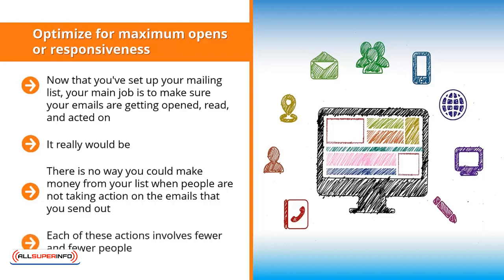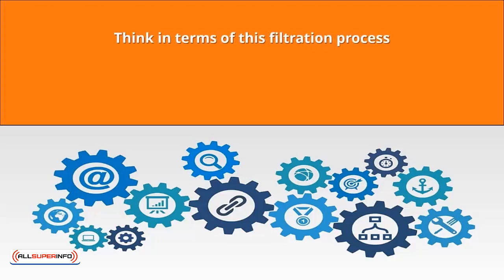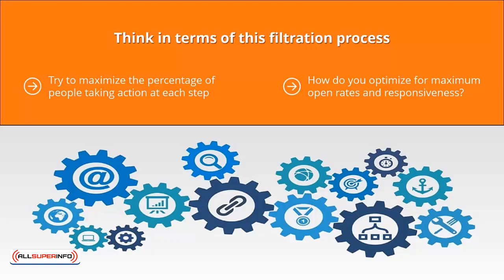You have to work actively to maximize the percentage of people opening your emails, reading them, and clicking on them. Each of these actions involves fewer and fewer people. You can start with 1,000 people on your list and end up with only 100 opening your emails; of those, only 20 might end up clicking the link. Think in terms of this filtration process. Try to maximize the percentage of people taking action at each step.